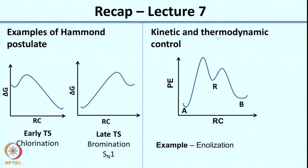We also looked at the concept of kinetic and thermodynamic control. This is a method used when you can form two products from one reactant. Depending on whether the activation energy is low, the product formed is said to be under kinetic control. If activation energy is high, product A forms slower than B. We also looked at product stability and the specific example of enolization, and how you can get it to go between kinetically and thermodynamically controlled products by varying conditions such as temperature and nature of the base.